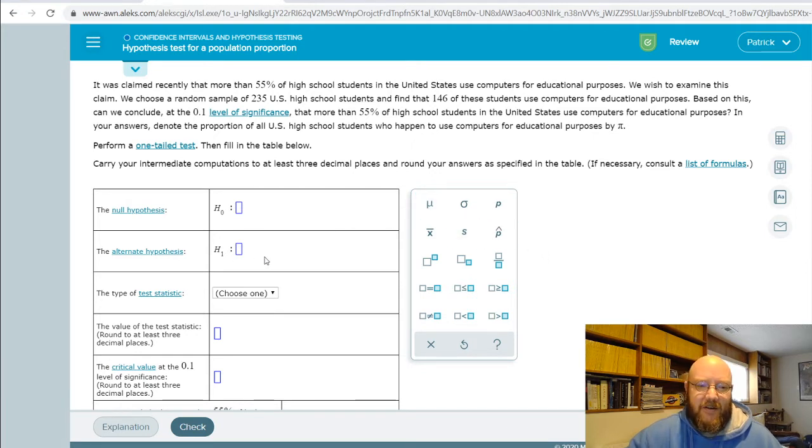And so let's pick out our alternate hypothesis here. You've got to be careful with these, because sometimes, as the hypothesis testing questions go on, they start throwing little twists at you here and there. So it was claimed recently that more than 55% of high school students in the United States use computers for educational purposes. We want to examine this claim. So it shows a random sample, 235 high school students, 146 use computers for educational purposes. This must be an old test.